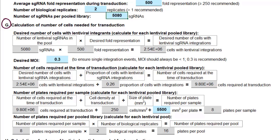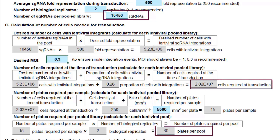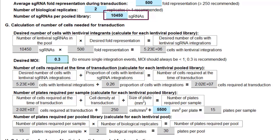If we use, for example, the whole genome library, which has 18 pools of 10,450 sgRNAs, then we'll need more cells and more plates per pool. Please bear in mind that for this library there are 18 pools.